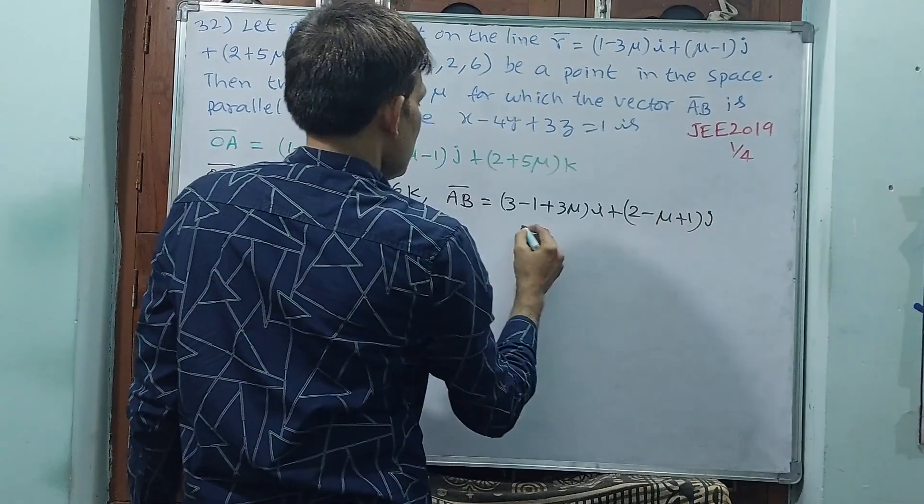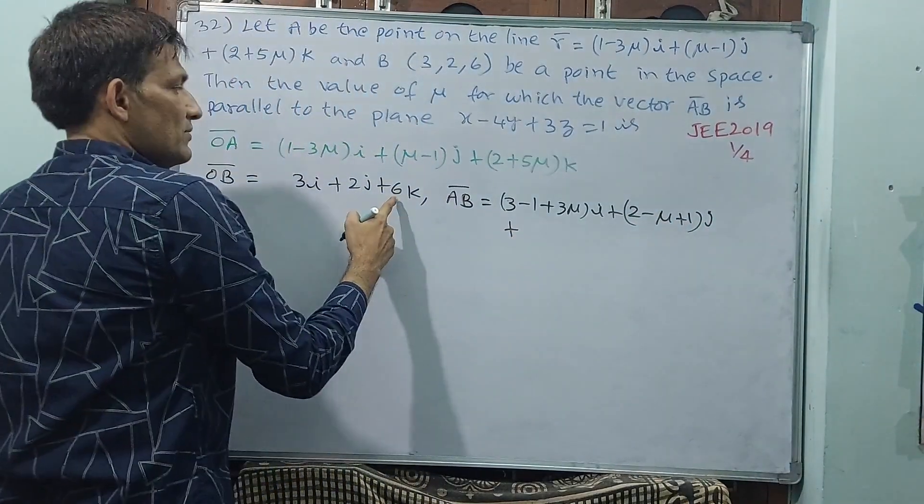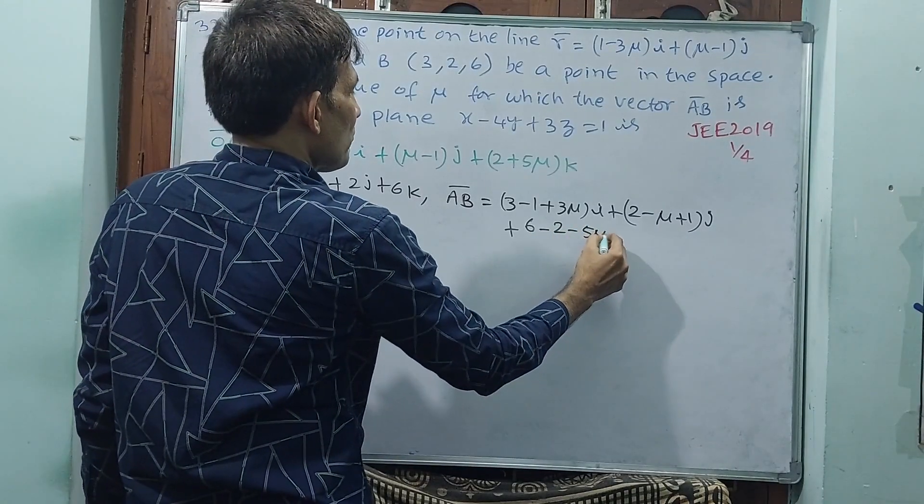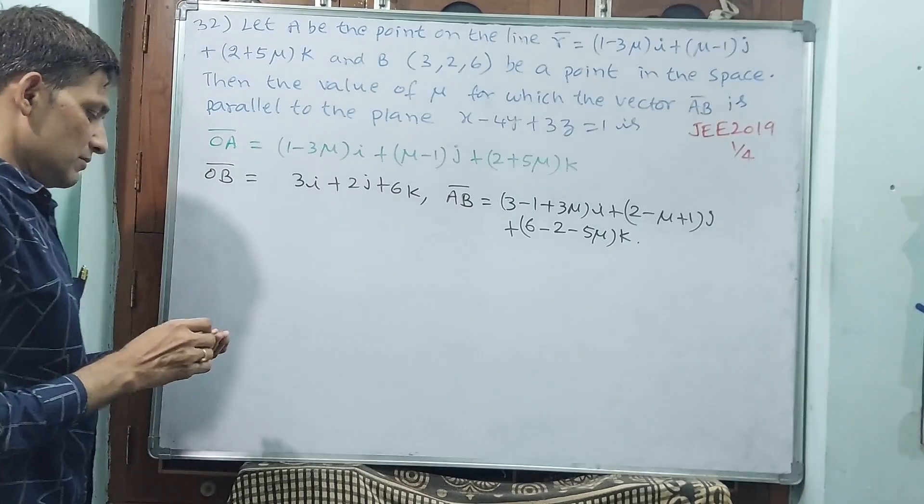Plus (6 minus 2 minus 5μ)k. Okay, now settle this properly.